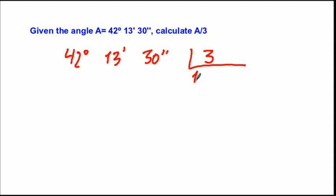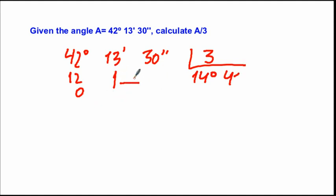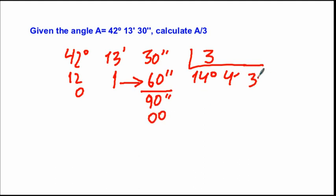Dividing each part: 42 divided by 3 is 14 with remainder 0, so 14 degrees. Dividing 13 minutes by 3 gives 4 with remainder 1. We convert the 1 minute remainder into 60 seconds, making 90 seconds total. Dividing 90 by 3 gives 30 seconds. So A divided by 3 is 14 degrees, 4 minutes, and 30 seconds.